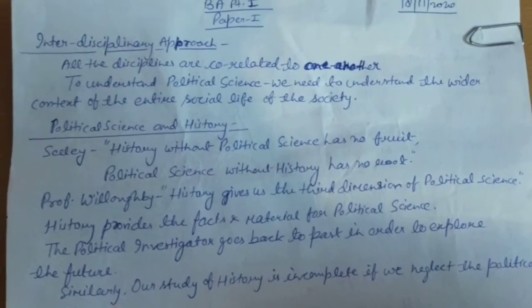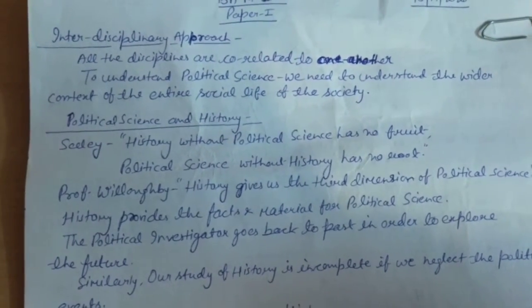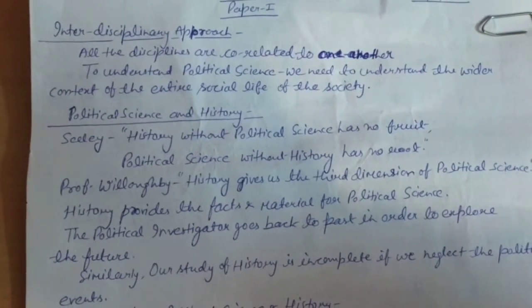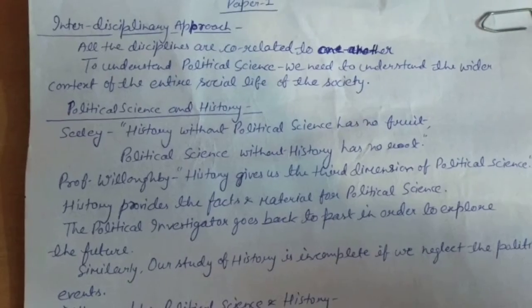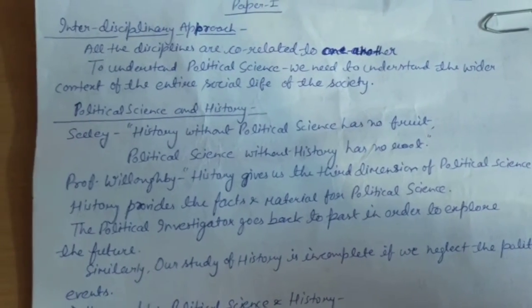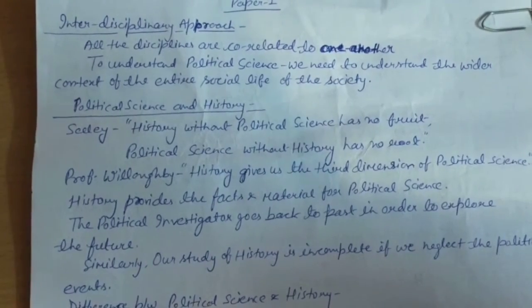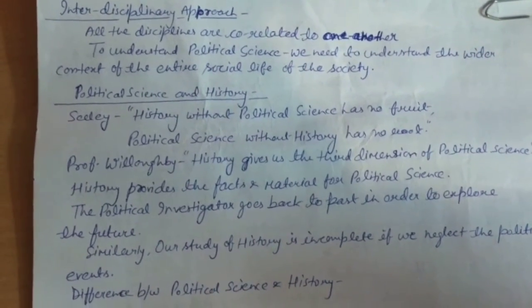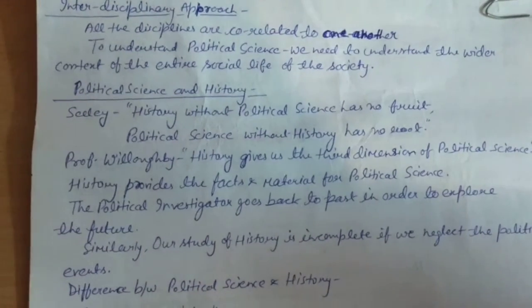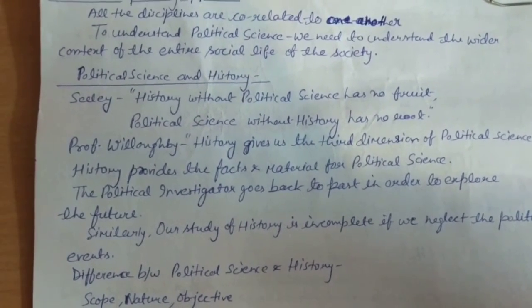In this video, we will discuss about the interdisciplinary approach. What is the meaning of interdisciplinary approach? According to this approach, all the disciplines are correlated to one another. Therefore, if we are to understand a discipline thoroughly, we will have to study the other subjects or disciplines as well. So to understand political science, we need to understand the wider context of the entire social life of the society.